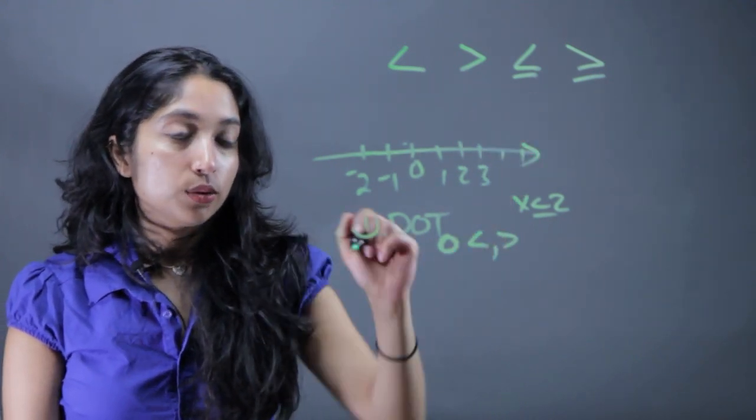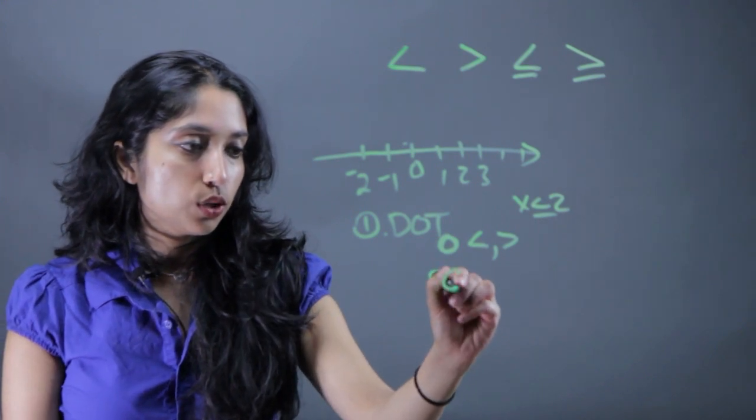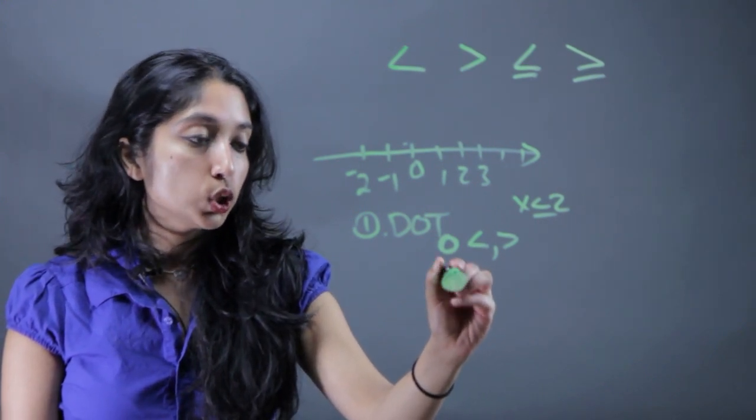If you're including the value, like less than or equal to or greater than or equal to, we're going to color it in because it includes that value.